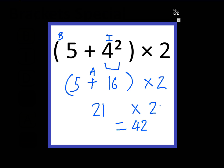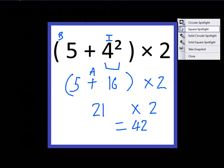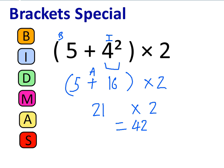So the moral of that story is: if you've got a pair of brackets and inside the brackets you've got more than one operation — we've got an addition here and an index number here for example — then you need to apply BIDMAS to everything that's going on inside the brackets.